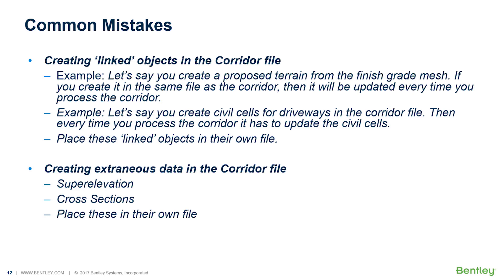Here are some common mistakes: creating linked objects in the corridor file. For example, if you create a proposed terrain from the finish grade mesh in the same file as the corridor, it will be updated every time you process the corridor. Similarly, if you create civil cells for driveways in your corridor file, every time you process the corridor it has to update all the civil cells. You can place these linked objects in their own file — for example, a file for civil cells that is referenced into your corridor.